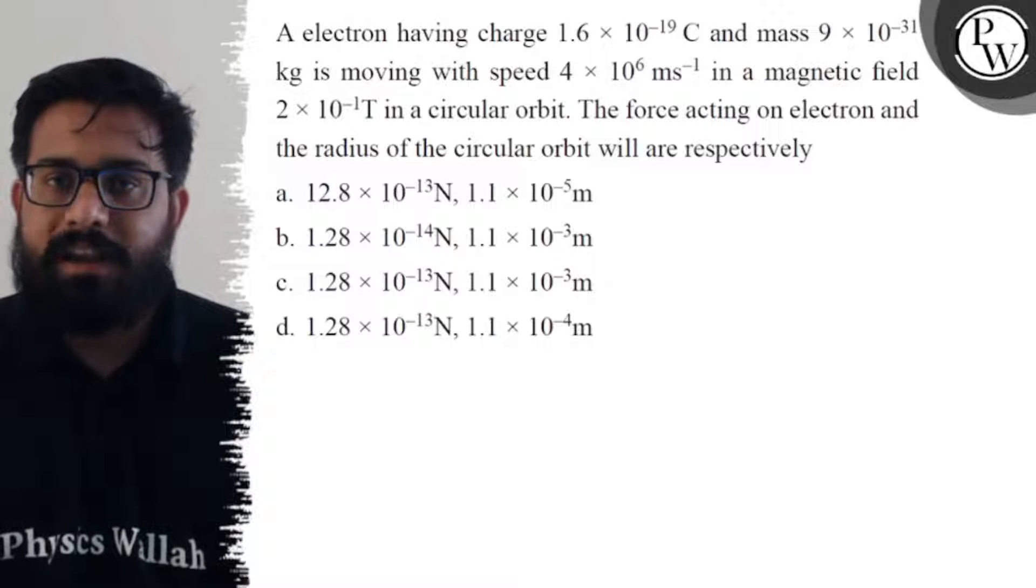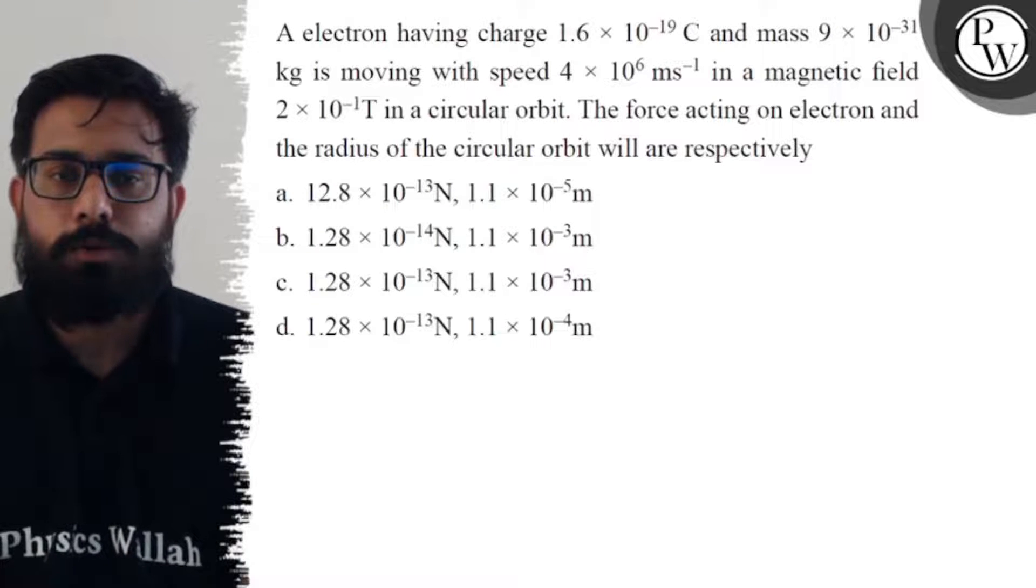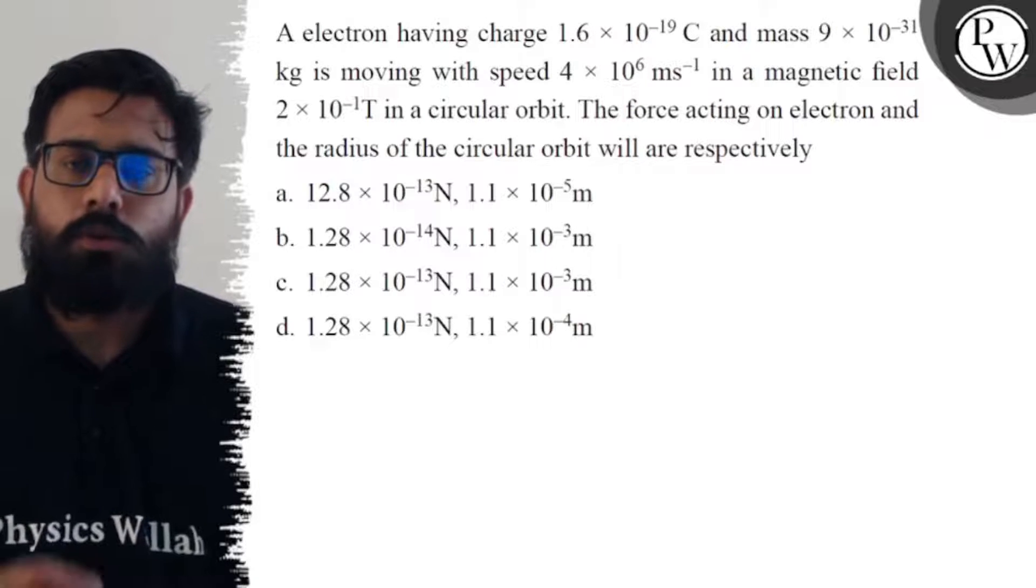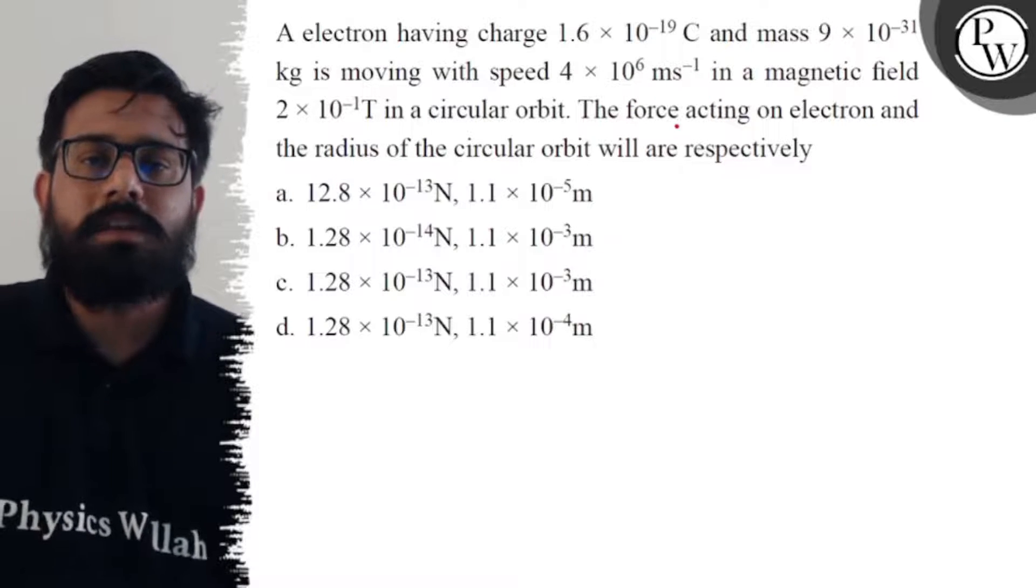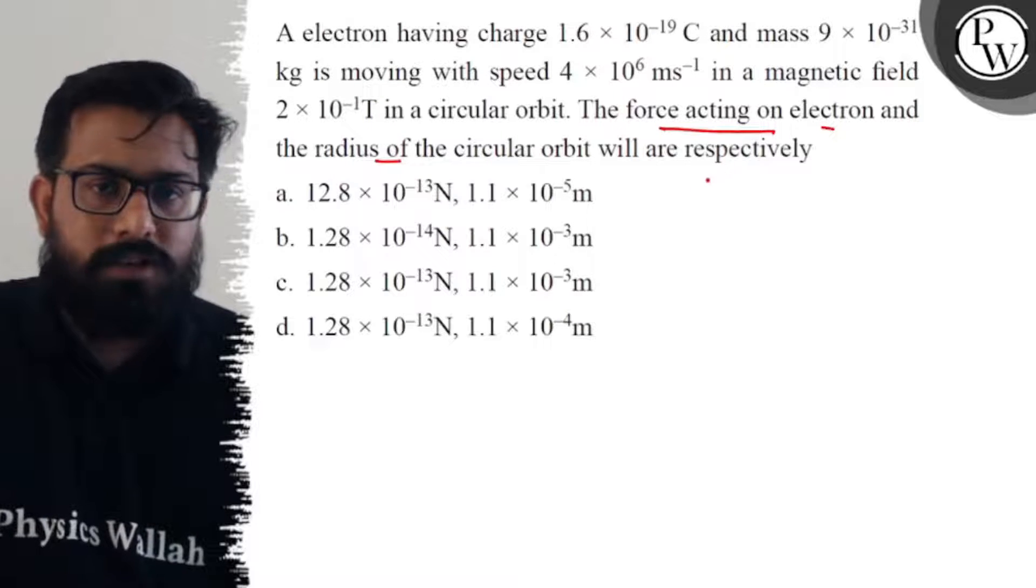Fourth option says 1.28 × 10^-30 newton and 1.1 × 10^-4 meter. So two things we have to find here: the first one is the force acting on the electron and the second one is the radius of the electron.